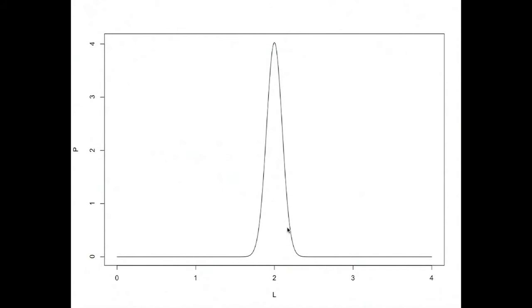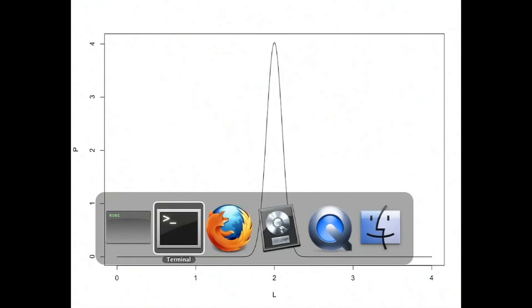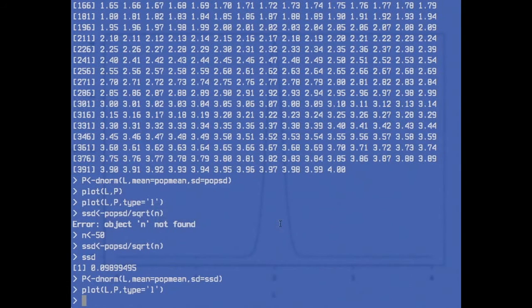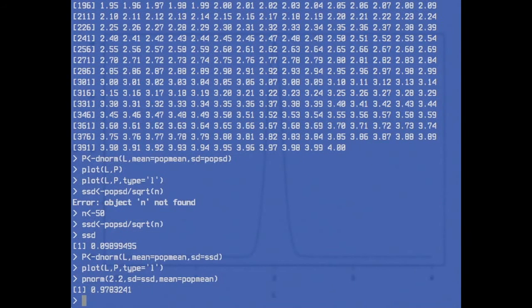In R, you have a function called pnorm to calculate the area under the normal distribution from negative infinity up to a number. So I can calculate from negative infinity up to 2.2 with pnorm. That's pnorm with 2.2, the standard deviation ssd, and the mean is the same as population mean. There it is.